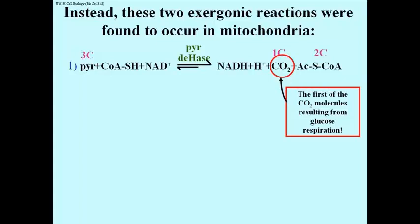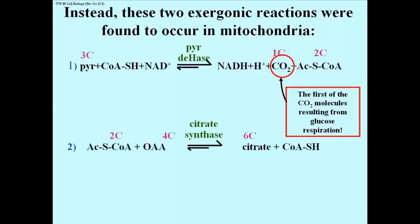The other reaction is the second one, taking one of the products, acetyl S-coenzyme A, and linking it with oxaloacetate (OAA) to make the first component of the citric acid cycle, namely citric acid.